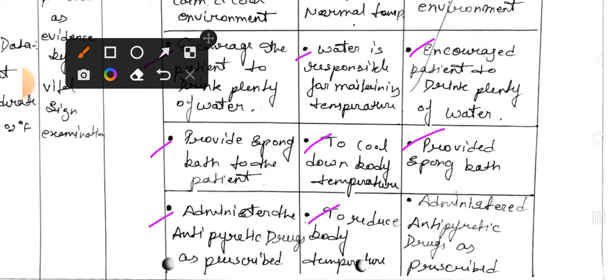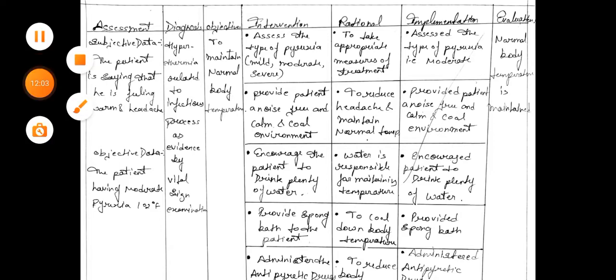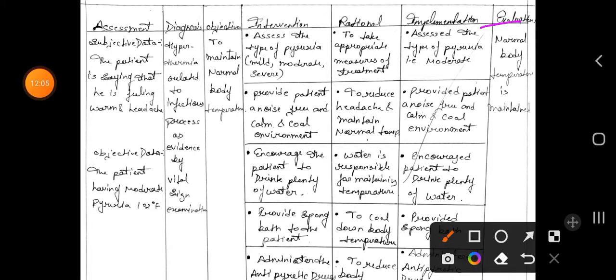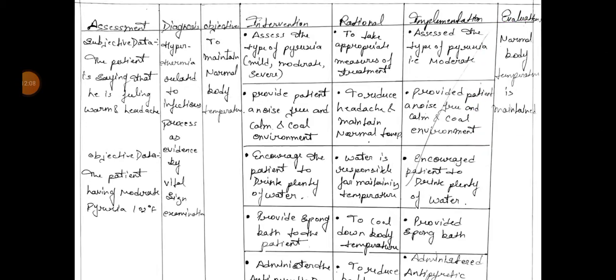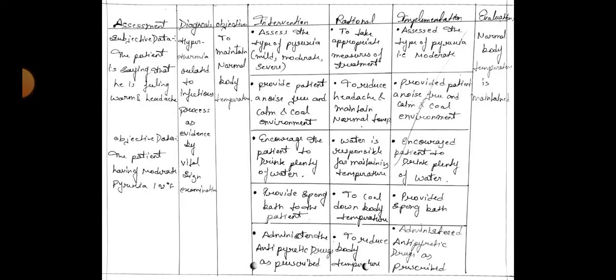Rational: to reduce body temperature. Implementation: administer antipyretics drug as prescribed. Evaluation: normal body temperature is maintained — the goal is achieved by providing these interventions. This is our third nursing care plan.